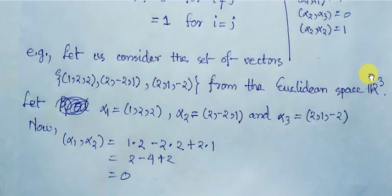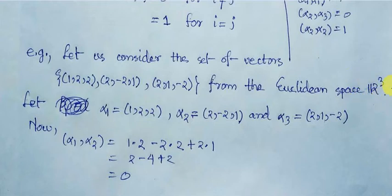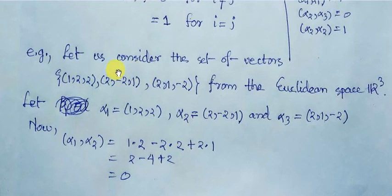Here we have considered the Euclidean space R3 under the standard inner product — meaning component-wise multiplication and addition of corresponding terms. We have taken a collection of three vectors: alpha 1 = (1, 2, 2), alpha 2 = (2, −2, 1), and alpha 3 = (2, 1, −2).